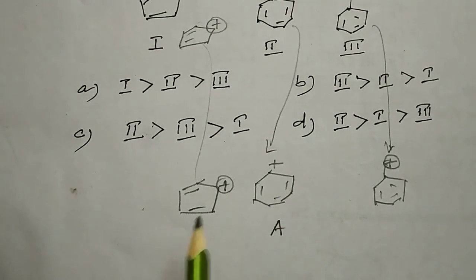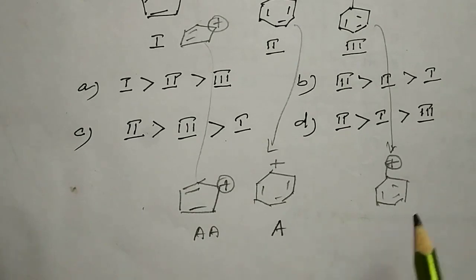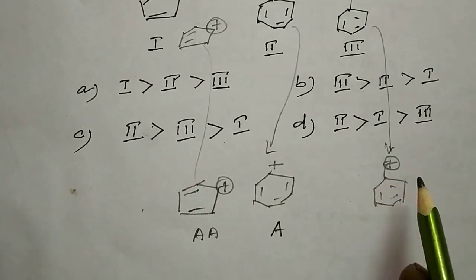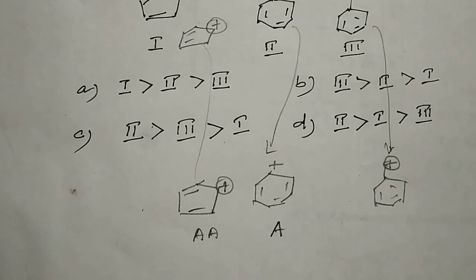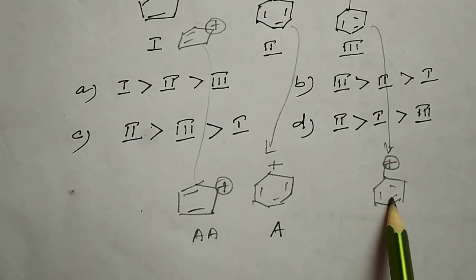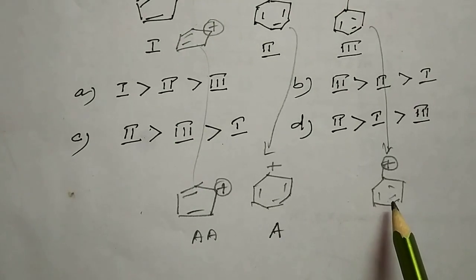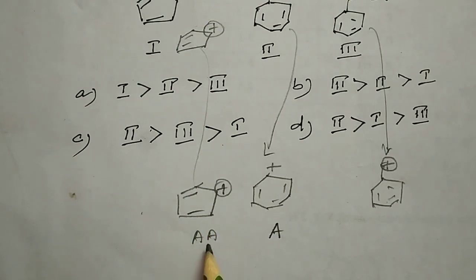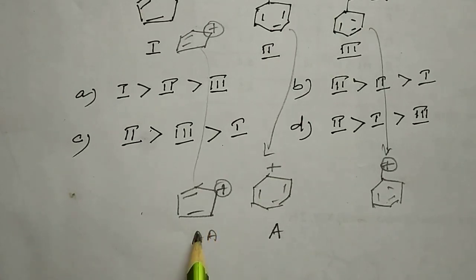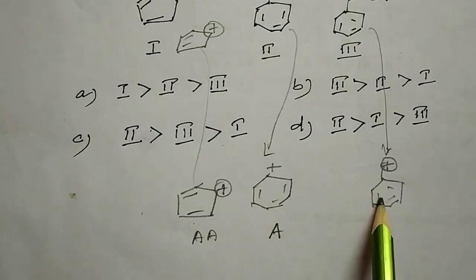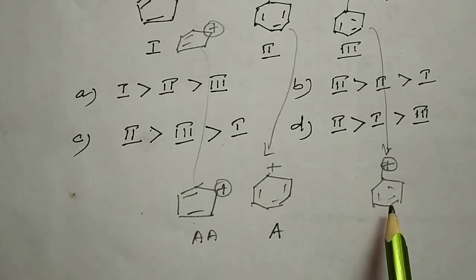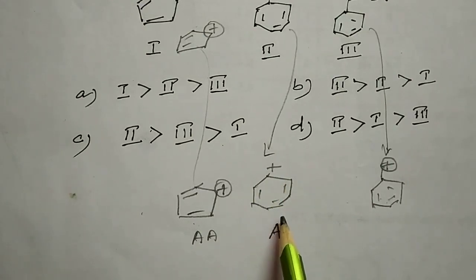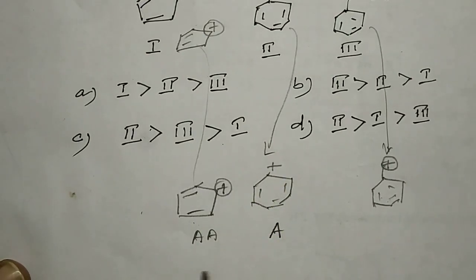The tropylium ion is aromatic, so it is the most stable. The cyclopentadienyl cation is anti-aromatic — anti-aromaticity is a destabilizing phenomenon, so it is extremely unstable. The benzyl cation is comparatively more stable than the cyclopentadienyl cation but less stable than the tropylium ion.